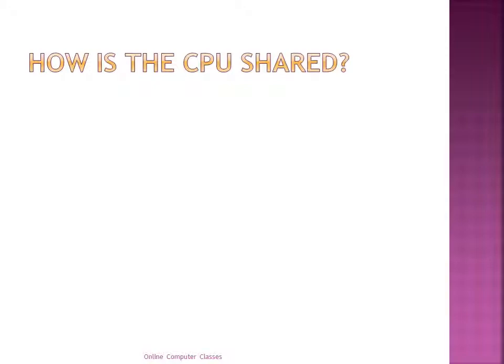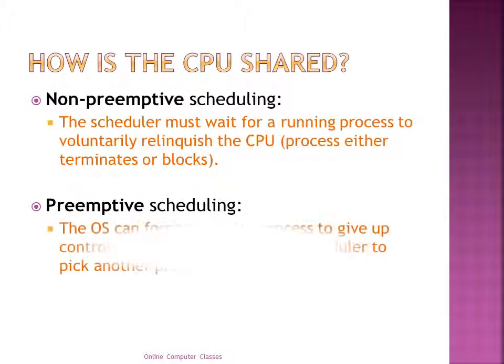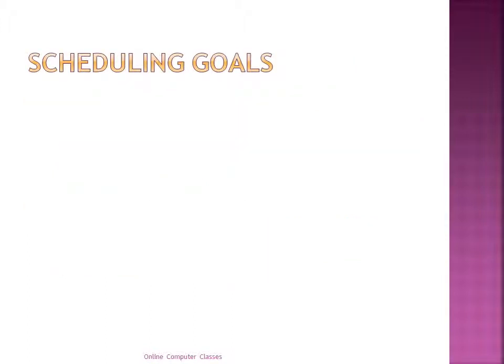In non-preemptive scheduling, the scheduler must wait for the running process to voluntarily relinquish the CPU — either by terminating or blocking. In preemptive scheduling, the operating system can force a running process to give up control of the CPU, allowing the scheduler to pick another process.